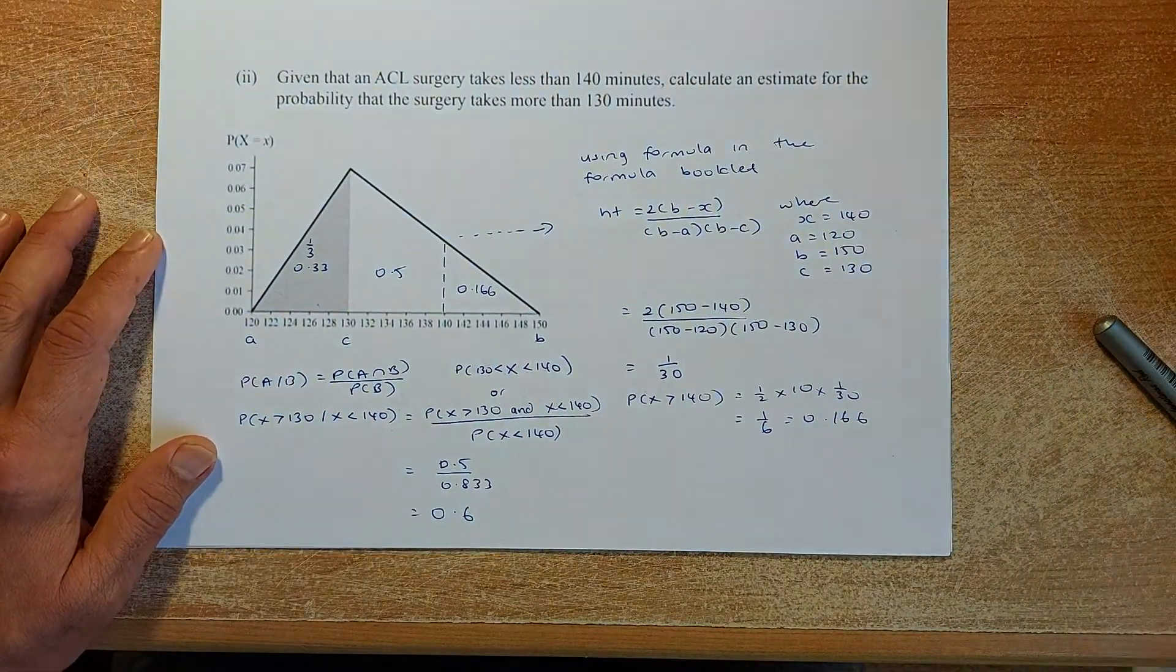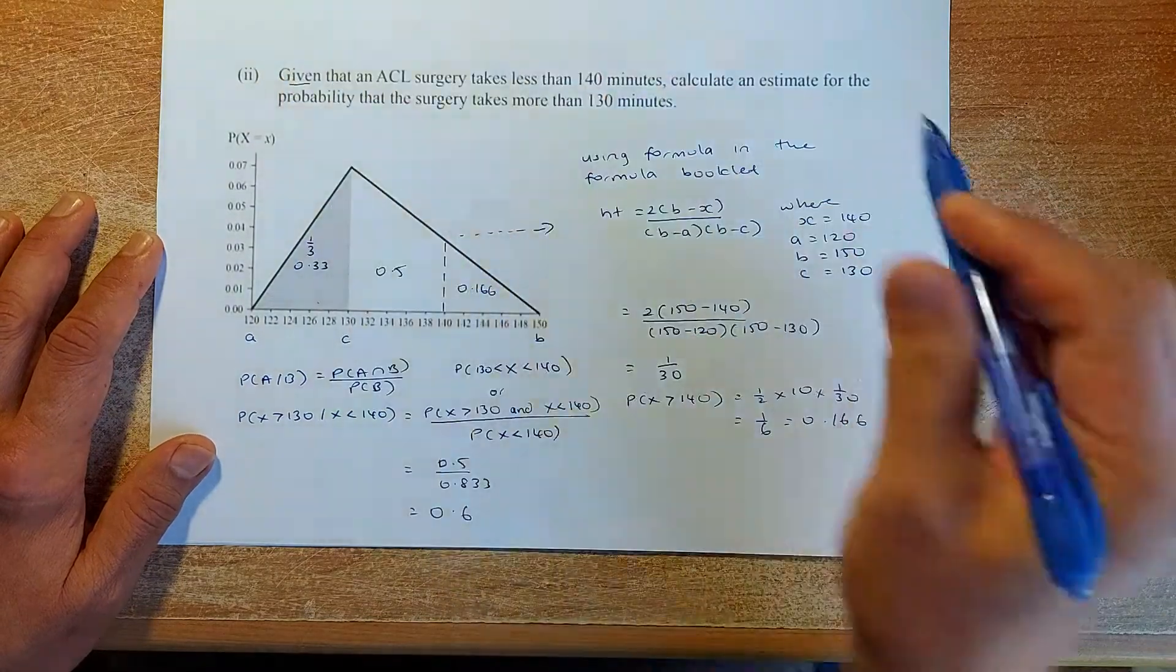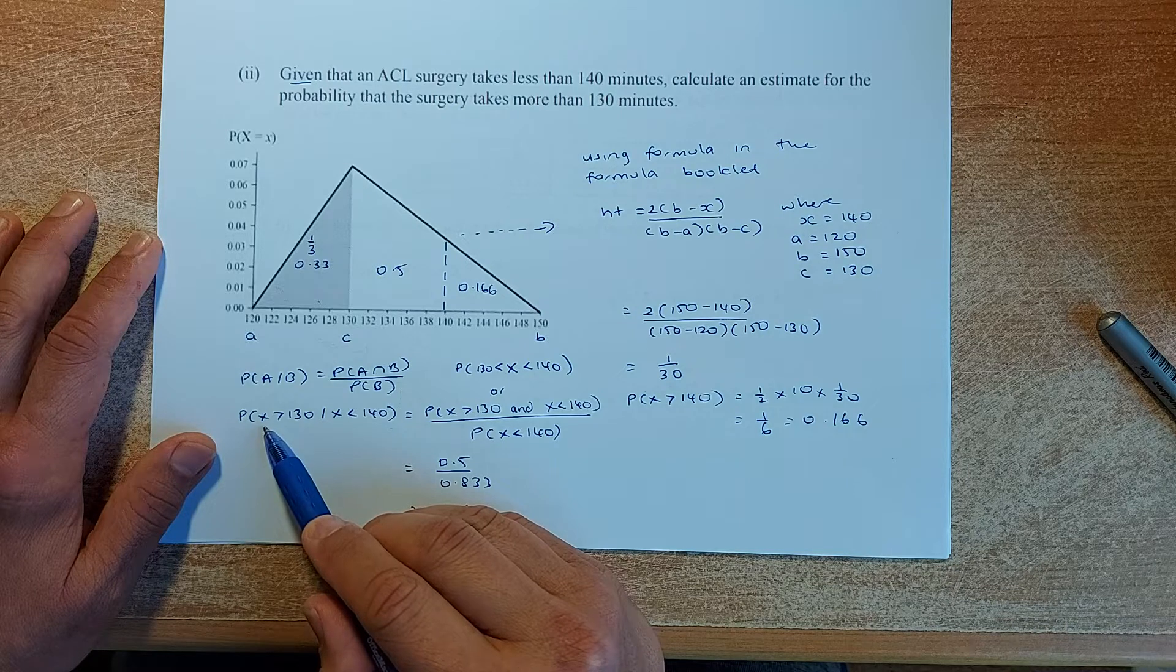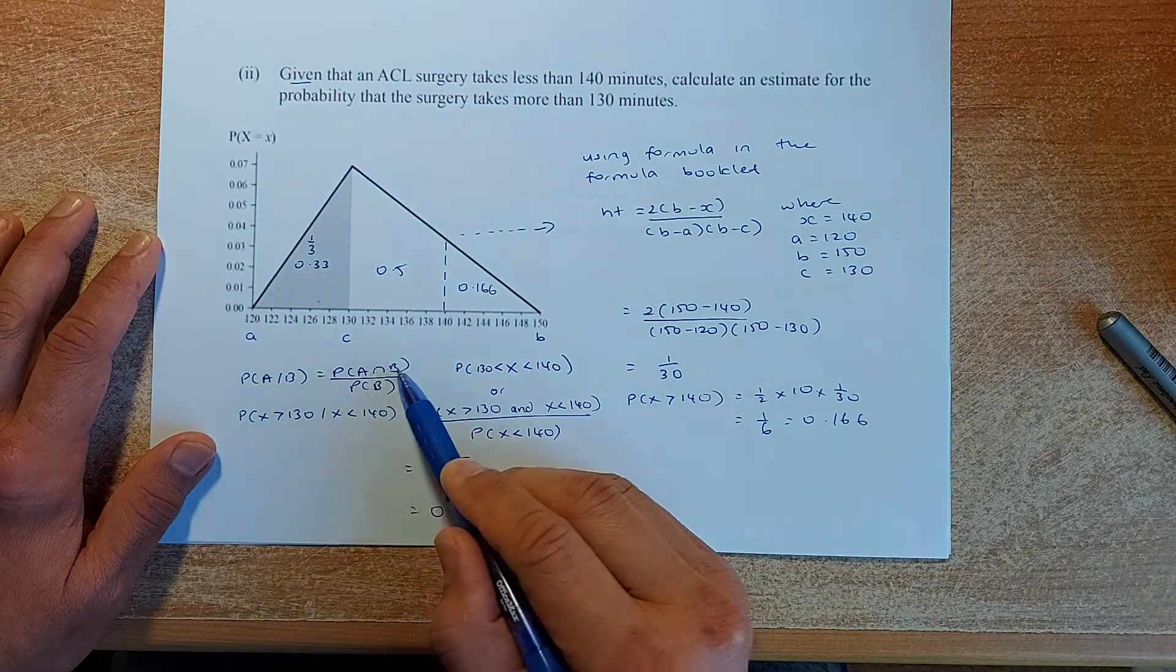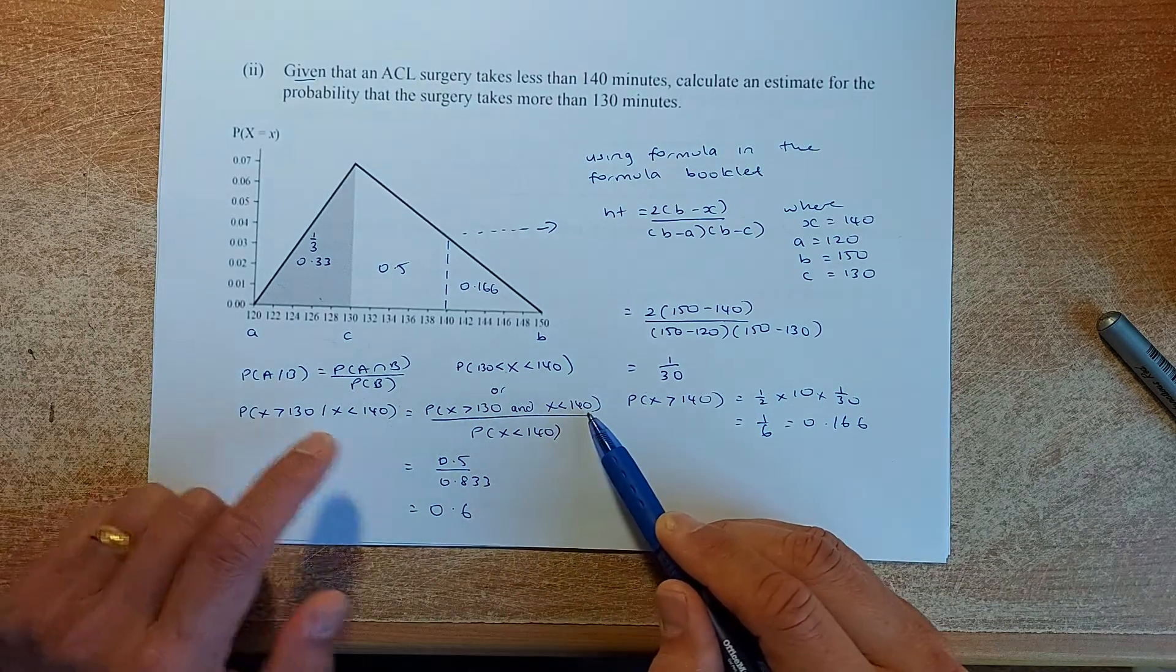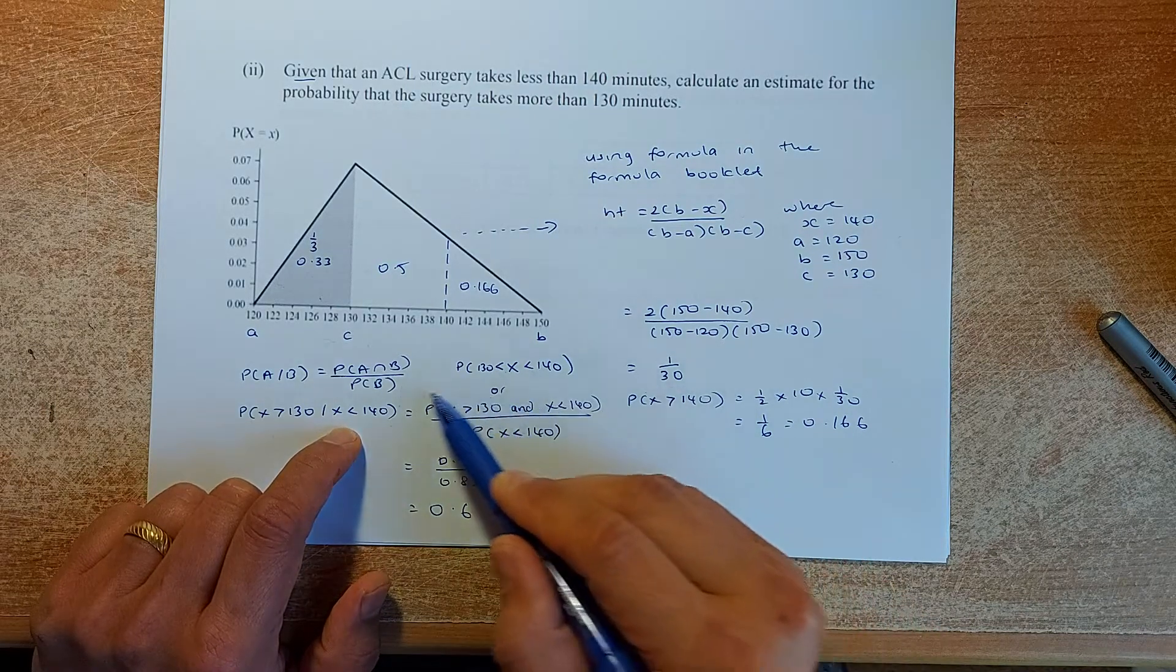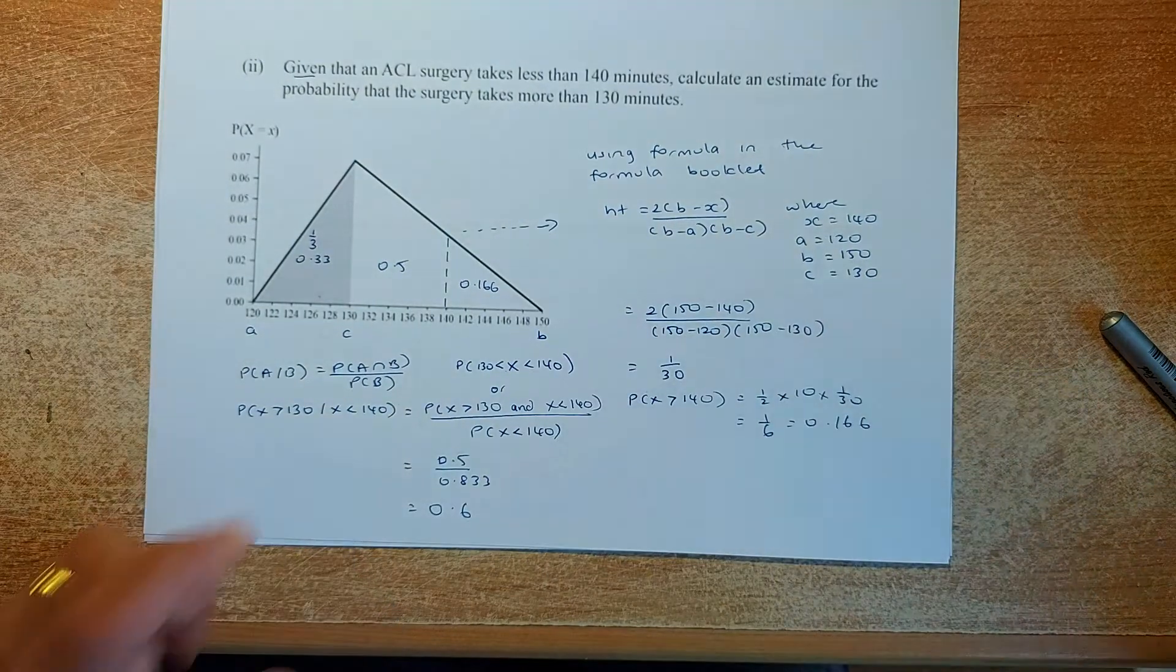Now we are doing the excellence question. Given the ACL takes less than 140, calculate the probability that it takes more than 130. This is conditional probability. Using the conditional probability formula, A given B is always A and B divided by the probability of B. So we get P(X > 130 and X < 140) divided by P(X < 140). Now we need to find all the values here by calculating the areas of each portion of the triangle.